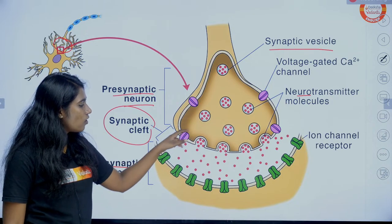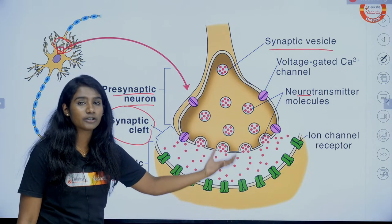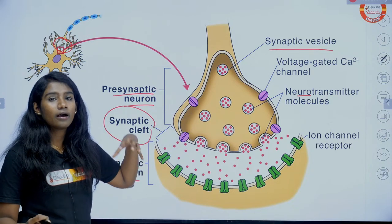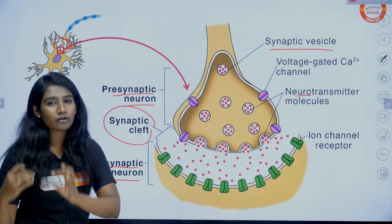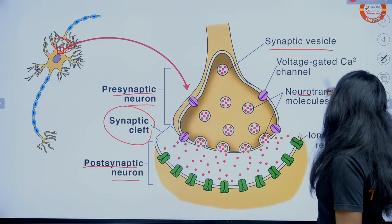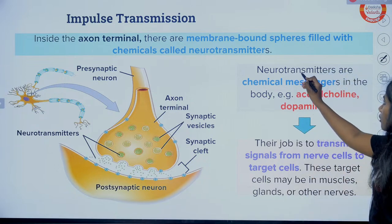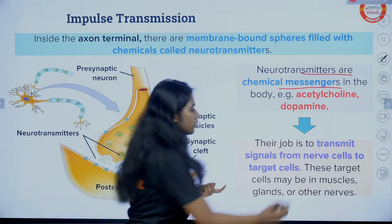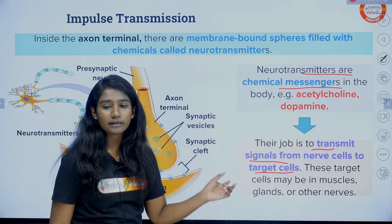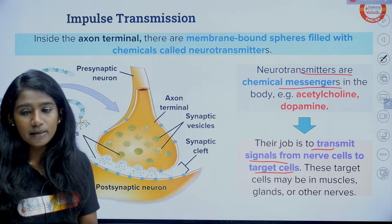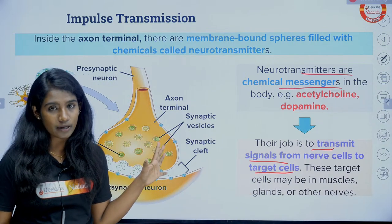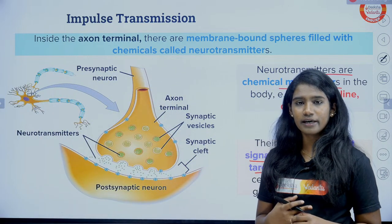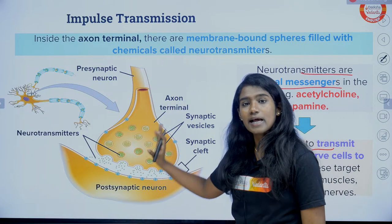In the synaptic cleft, the neurotransmitters are concentrated on one side only, which ensures the electrical impulse always moves from the region where the neurotransmitter is concentrated to the region where it is not. The neurotransmitters — for example acetylcholine or dopamine — transmit signals from the nerve cell to the target cell. If the question is asked for five marks, you will have to draw this diagram and label it. For three marks, it may not be needed, but to be safe, practice the diagram.